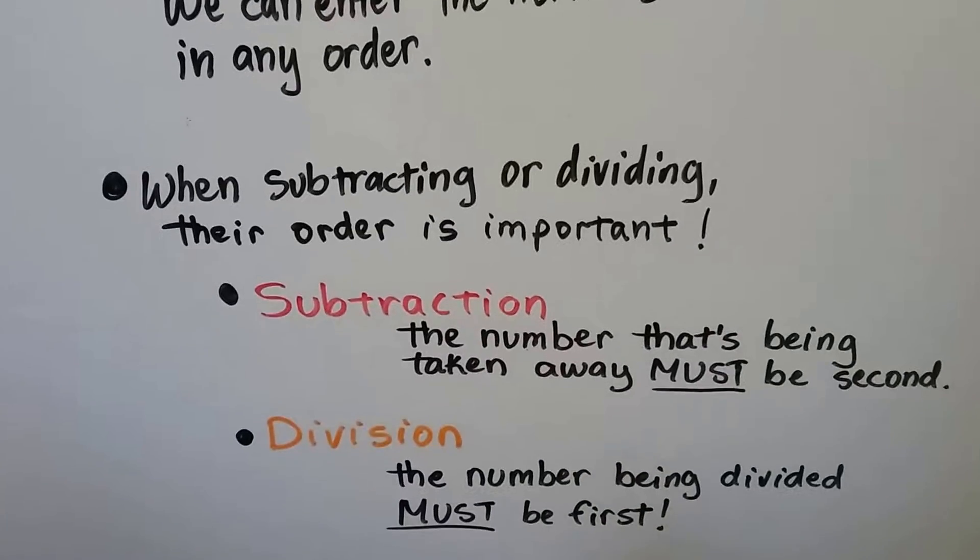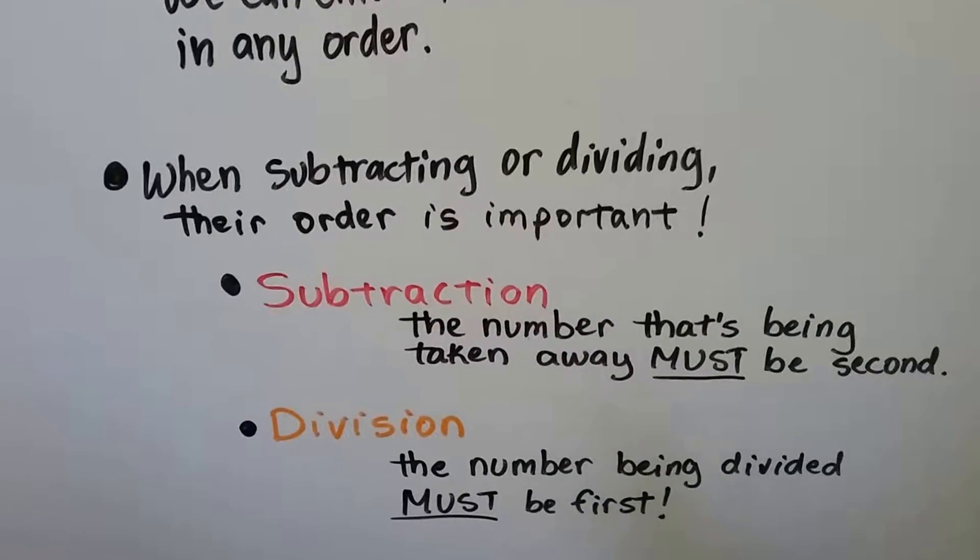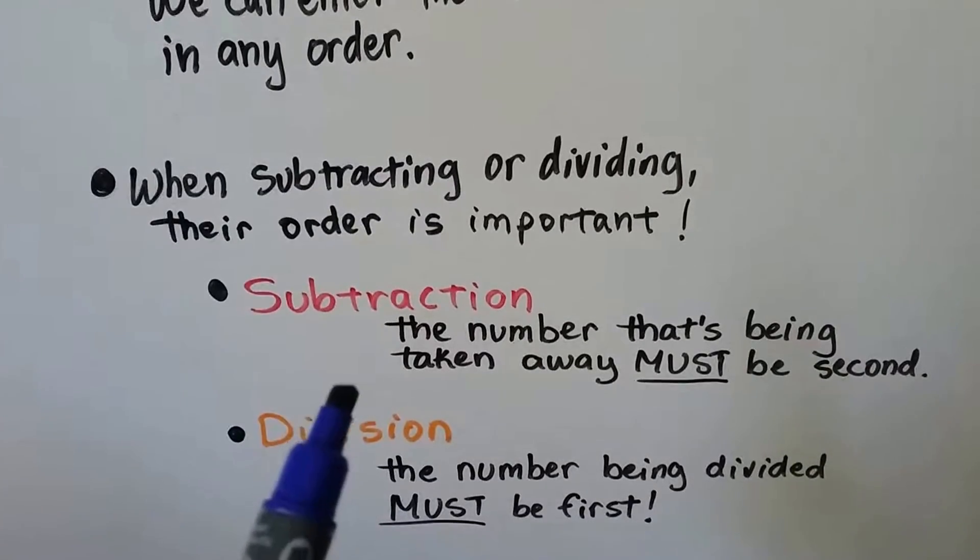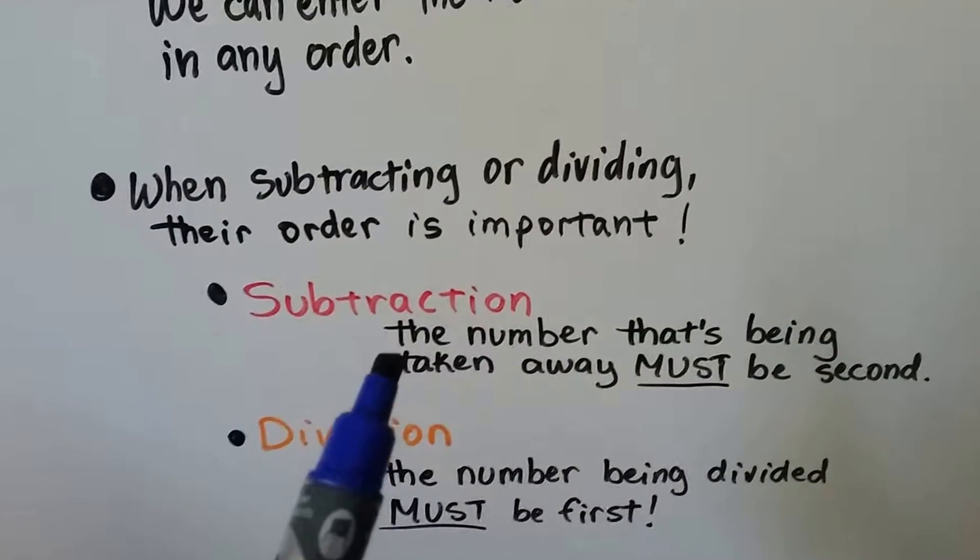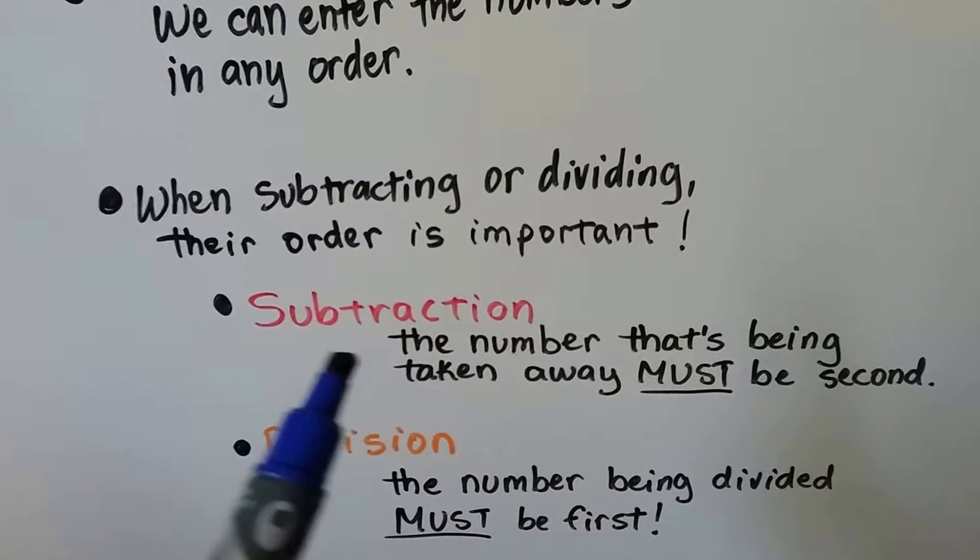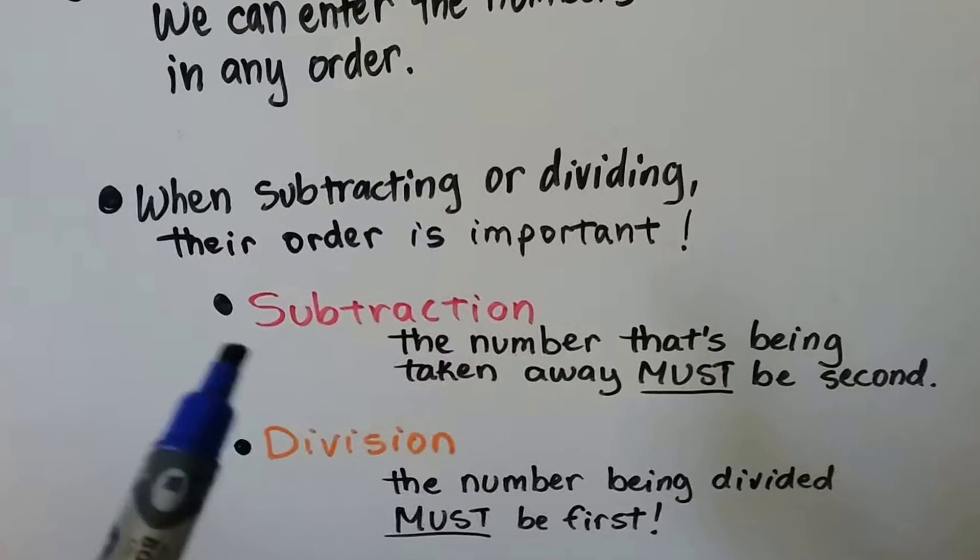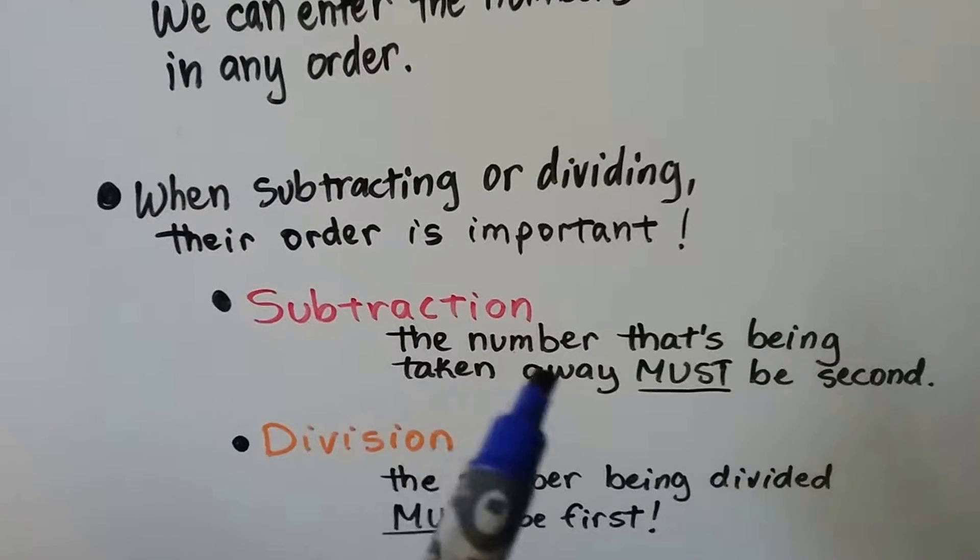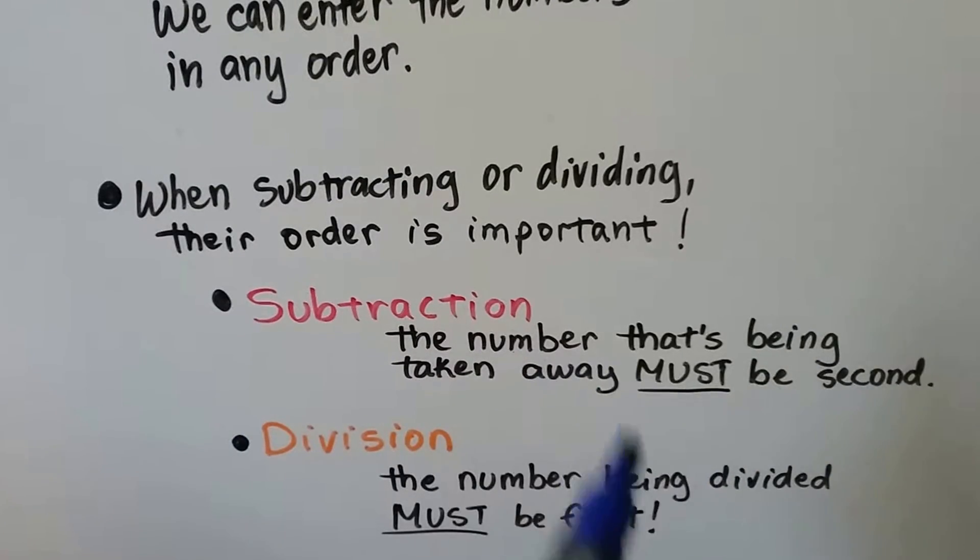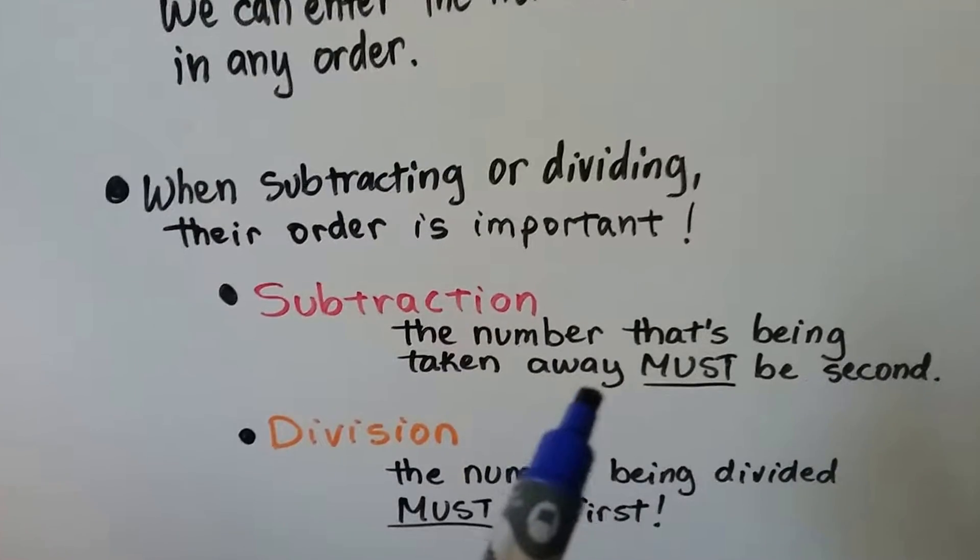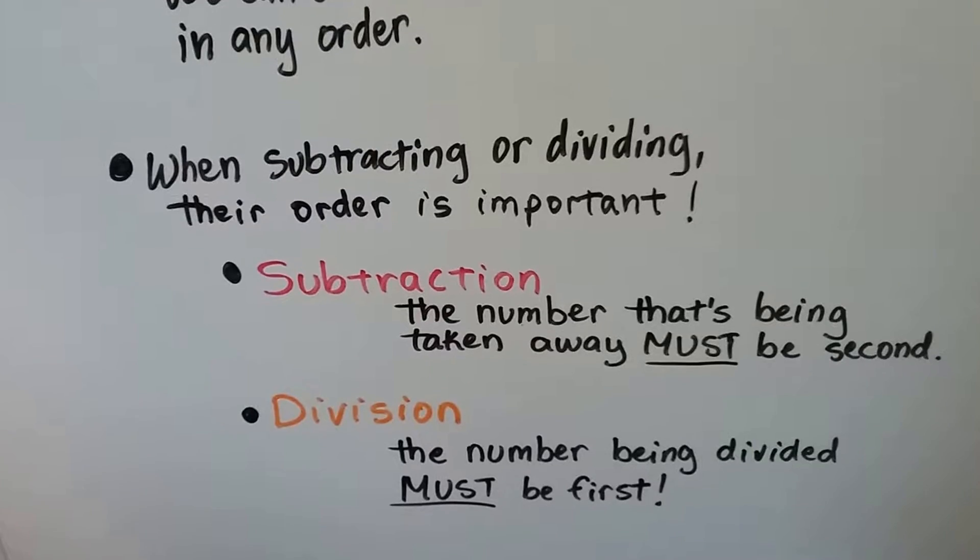But when we're subtracting or dividing, their order is really important. When we're subtracting, the number that's being taken away must be second. And you can't say that the smaller number is second because when you get into algebra, you could do 10 take away 16. So you could be taking away a larger number to get a negative answer. So make sure that the number that's being taken away is the second number.